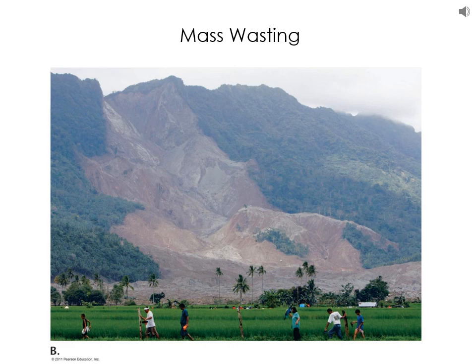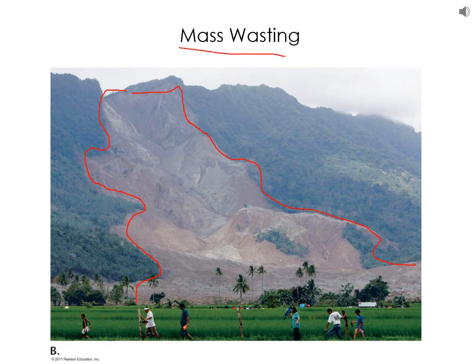The first thing we're going to talk about is mass wasting. Here we have a picture of a hillside — I believe this is in the Philippines — and this is a hillside that had a big landslide on it. We can see the big landslide scar coming down this mountain slope. A landslide is an example of mass wasting. Mass wasting is basically the movement of sediment under the influence of gravity, moving stuff downslope from high to low. Plate tectonics is pushing things up and creating mountains, and then our different methods of erosion are tearing things down.